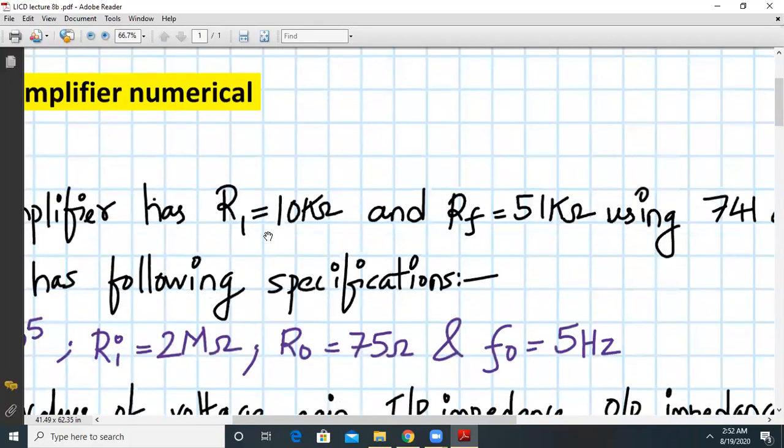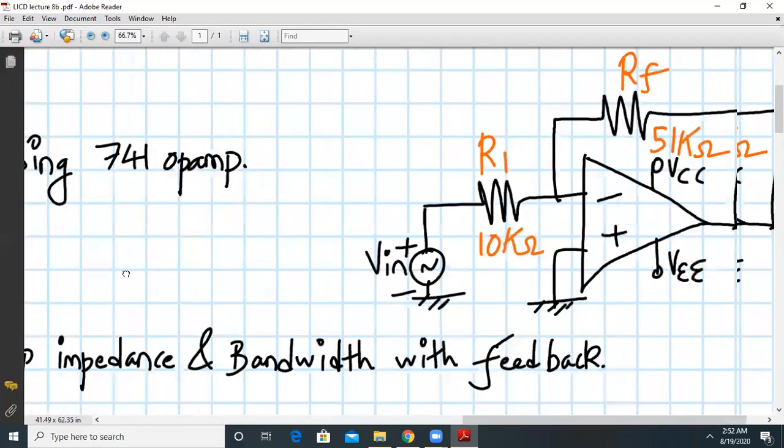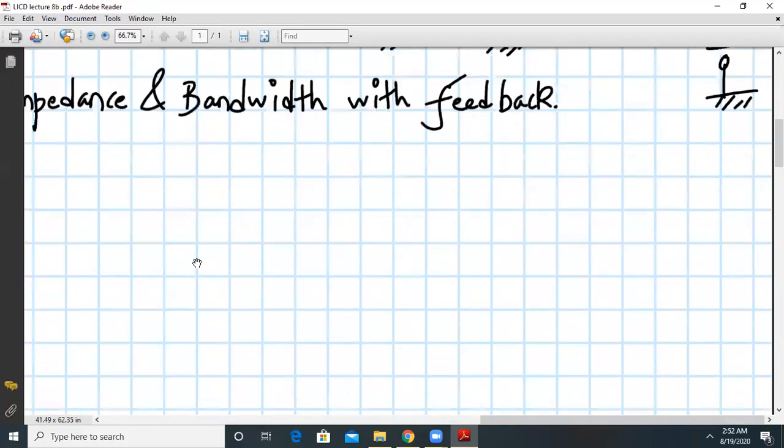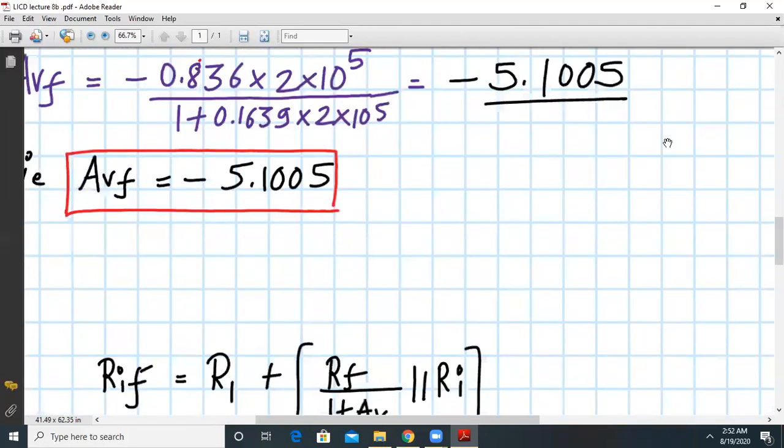Is this correct? As per our prediction, yes. As we have learned that Vout will be equal to minus Rf upon R1, that will be 51 divided by 10. So perfectly fine, the answer of 5.1 is perfectly fine.